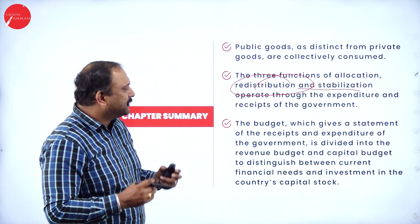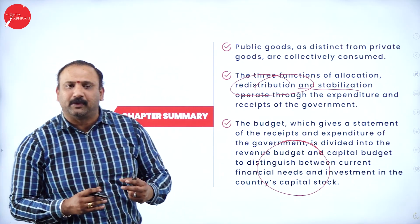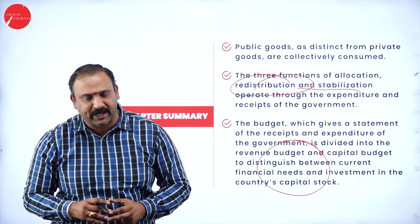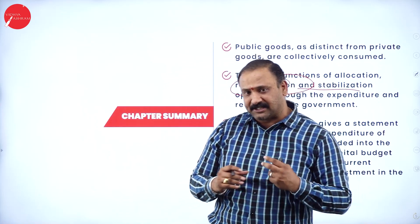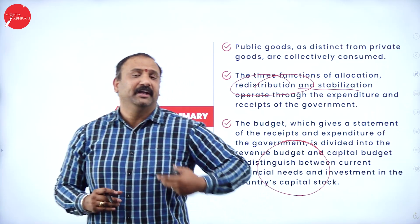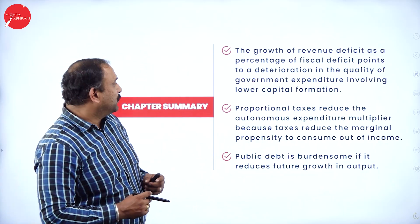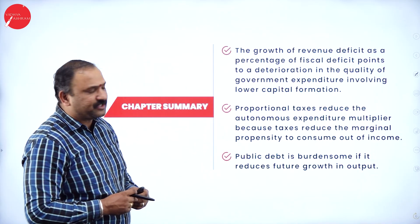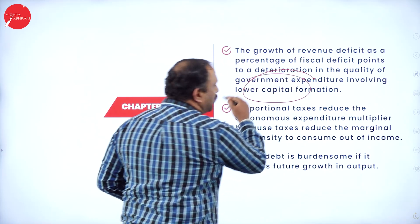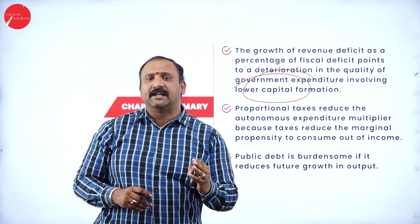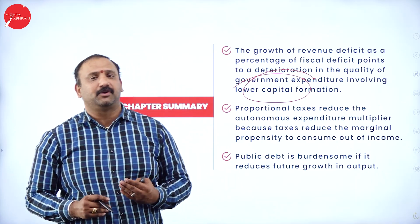The budget gives a statement of the receipts and the expenditure of the government, which is divided into revenue budget and capital budget, distinguished between current and financial needs and investments. The capital budget typically focuses on capital expenditure — expansion and the growth needs of the country — while the revenue budget talks about the areas of income that the government would be getting in. We also move into the revenue deficit, which is a percentage of fiscal deficit pointing to deterioration in the quality of government expenditure involving lower capital formation. So the government may not always get exactly the income it wanted, and those shortcomings are seen in the revenue budget.